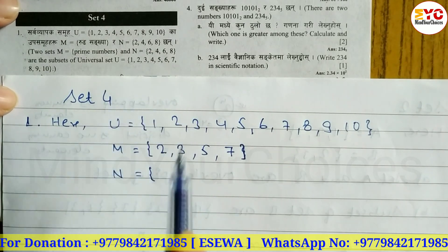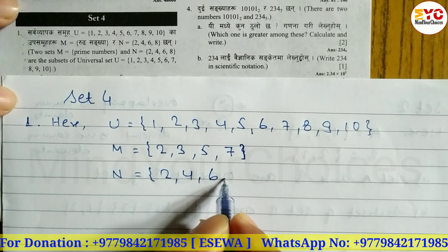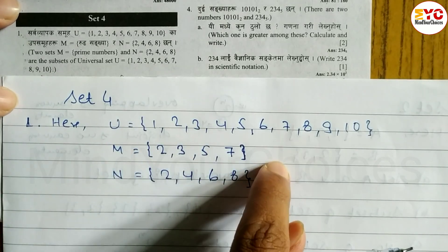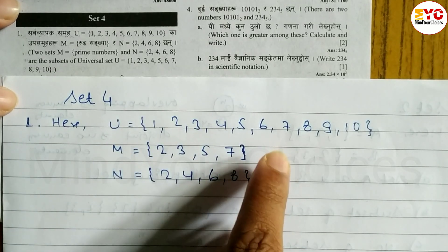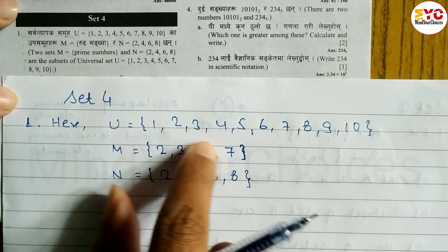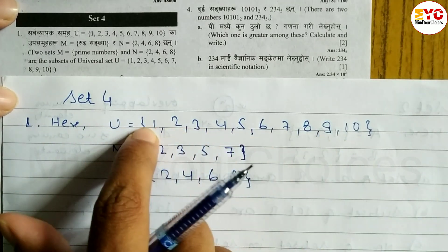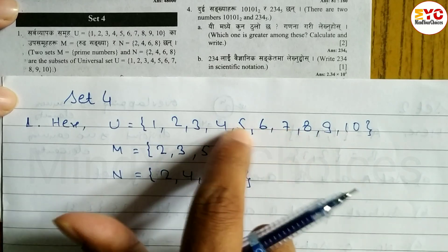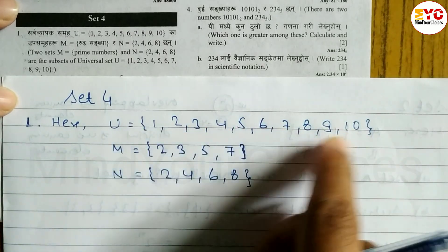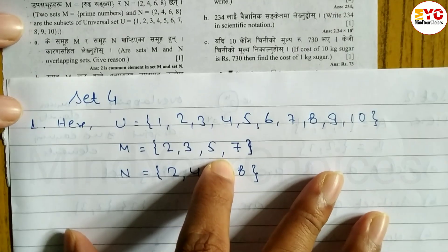Two, four, six, eight — these are the even numbers for set N. For set M, the prime numbers are: 2, 3, 5, 7. After 7, 11 is not within the universal set, 13 is also not — so we only take the prime numbers that are within the universal set U = {1 to 10}.